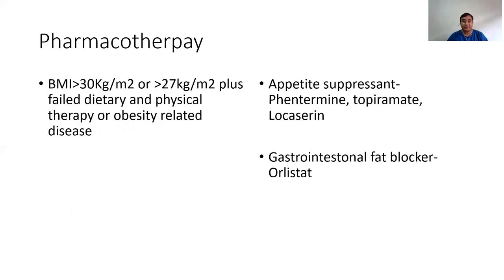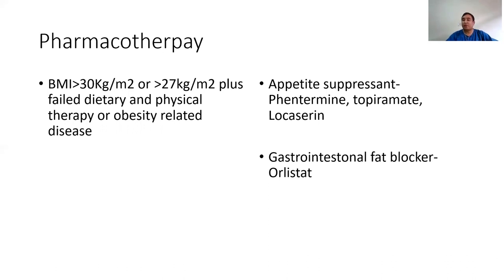Pharmacotherapy is the second-line therapy, indicated if someone has a BMI of more than 27 with failed dietary or physical therapy, or a BMI of more than 30 and they are motivated for dietary restriction and physical activity. There are two classifications: appetite suppressants like phentermine, topiramate, and lorcaserin — which act on the hypothalamus to suppress appetite; and gastrointestinal or fat blockers like orlistat. The FDA-approved anti-obesity medications are the phentermine plus topiramate combination, or lorcaserin.